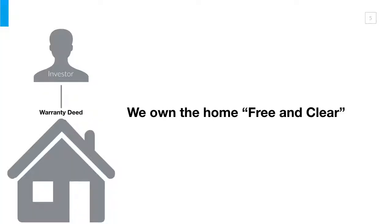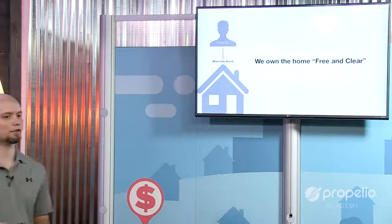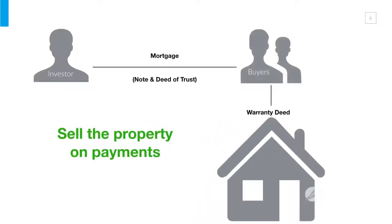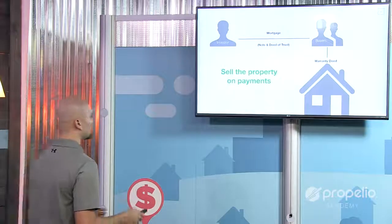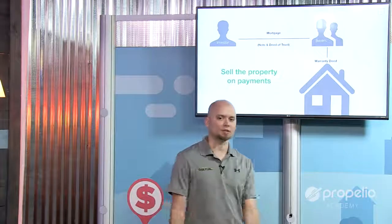So let's look at an example. Let's say you own a house free and clear — you're the investor with a warranty deed on this house. If you're going to sell it with owner financing, it's as simple as this: the warranty deed goes to your buyer so they become the owner of the property, and the buyer gives you a deed of trust. You sign a note with the buyer — they get the warranty deed and they've got a mortgage, but that mortgage goes to you. You're selling your property on payments — that's what owner financing is.